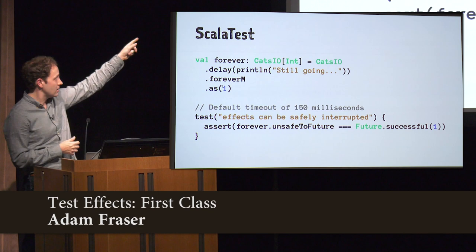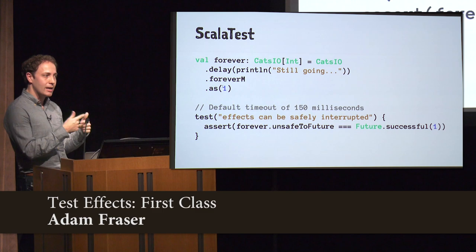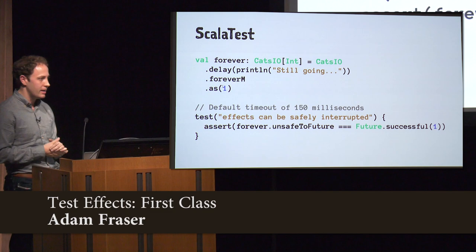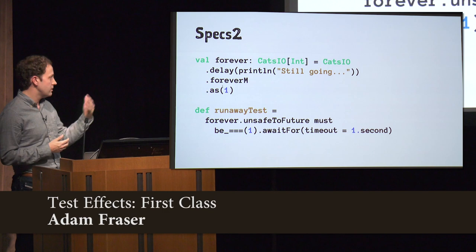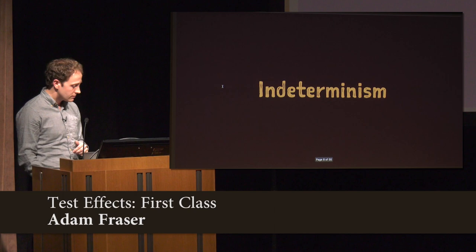Or worst case, maybe the effect is going to be in a loop but not printing anything. So you're just going to notice, hey, why did my computer suddenly get really slow — until you have to just shut down the whole thing and reopen it. Specs2 is exactly the same way. We can add a timeout, but a timeout is just failing the test — it doesn't have any way to actually interrupt the effect.